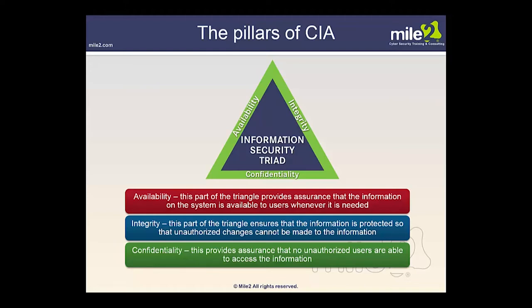Looking at availability: this part of the triangle provides assurance that the information on the system is available to users whenever it is needed. If our systems are not up and running and we lack availability, we don't look good to our customer base — it looks like we don't have our information security under control and can't deal with denial of service attacks.